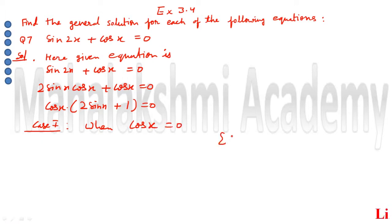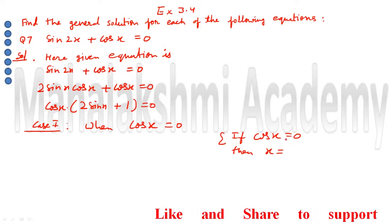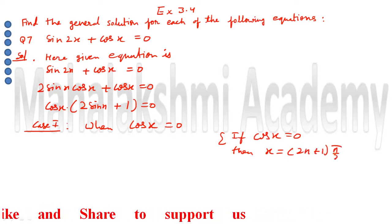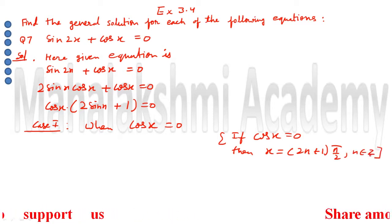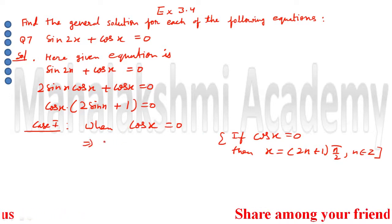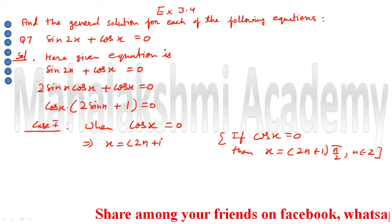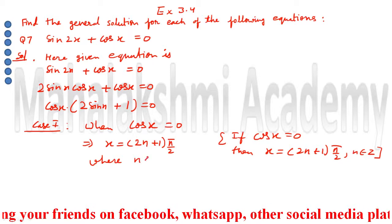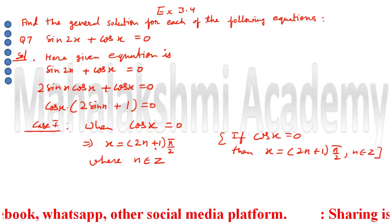Students, you have a direct formula: if cos x is equal to 0, then x is equal to (2n + 1)π/2. This is a direct formula which you have to learn, and here n belongs to Z. So from case first, the general solution is x is equal to (2n + 1) multiplied by π/2, where n belongs to the set of integers Z.